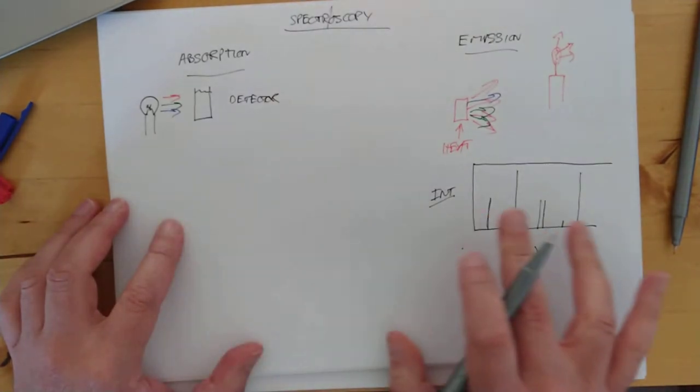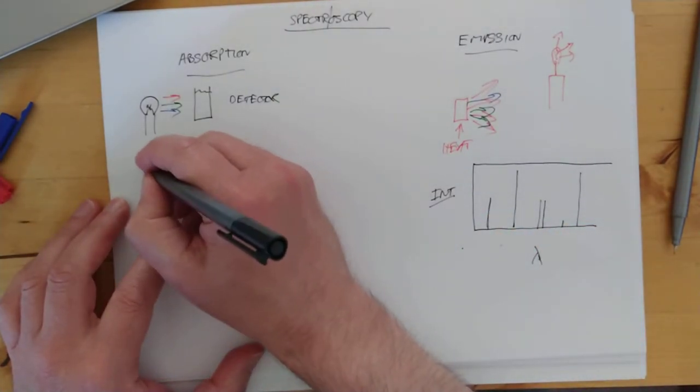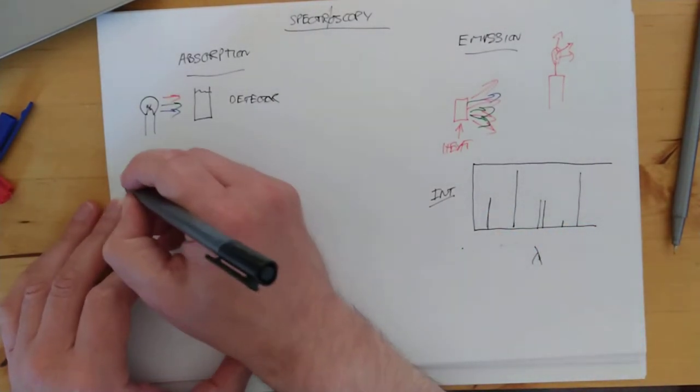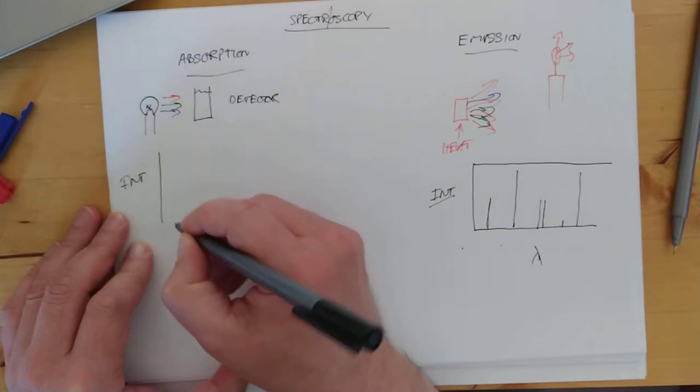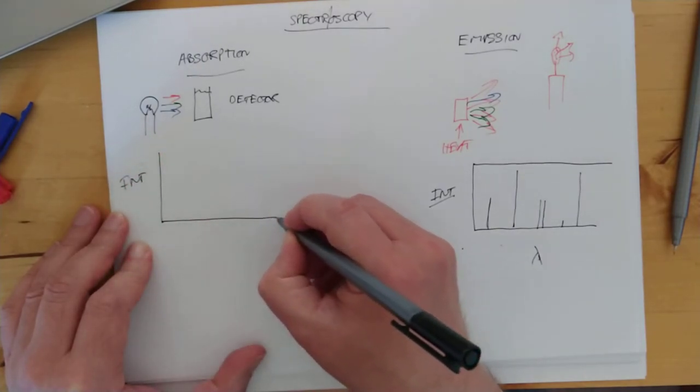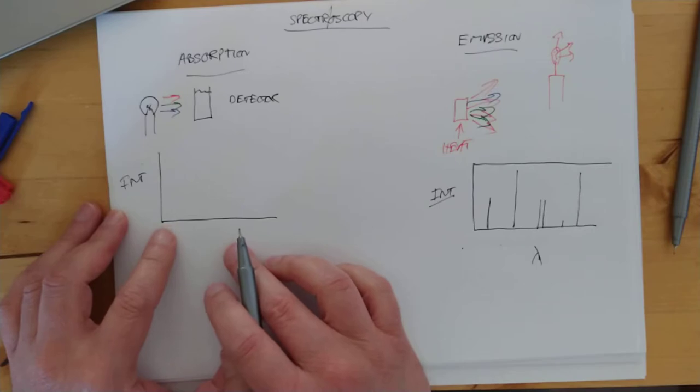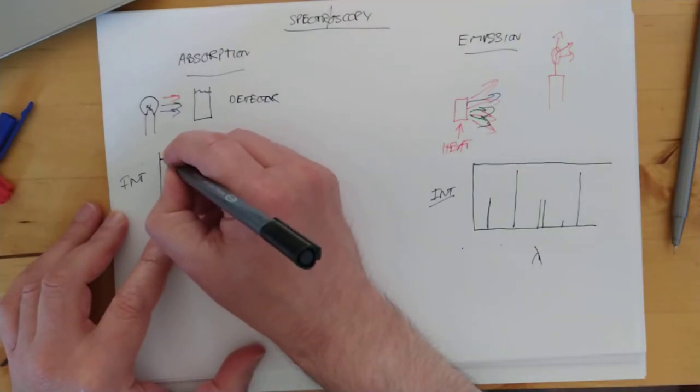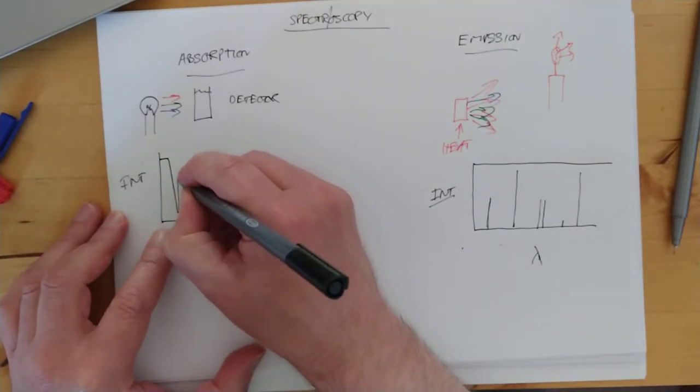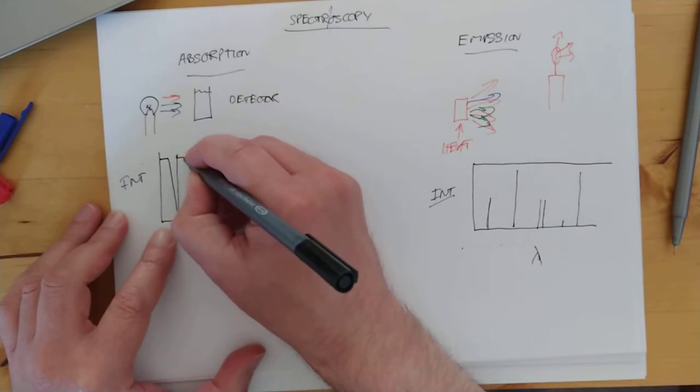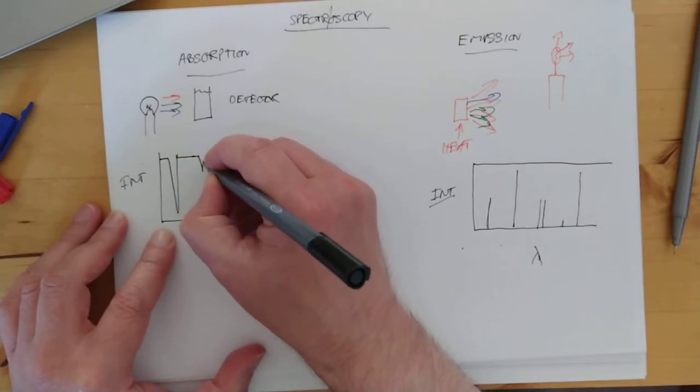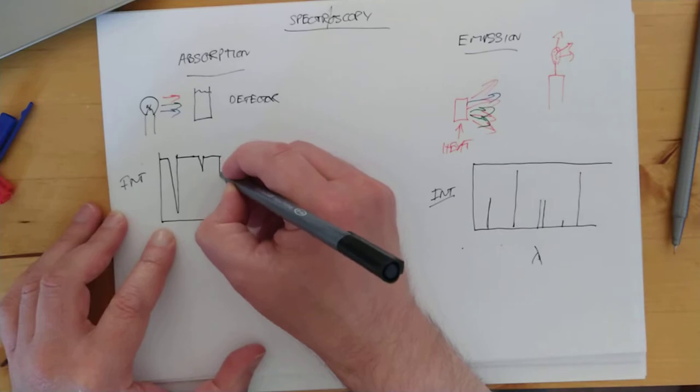And the output of an absorption spectrum will look quite different to this. It's going to look much more like this. We still have intensity, and we'll come back to this in organic later on. But you'll have spikes of light that has gone missing as this sample has absorbed specific wavelengths.